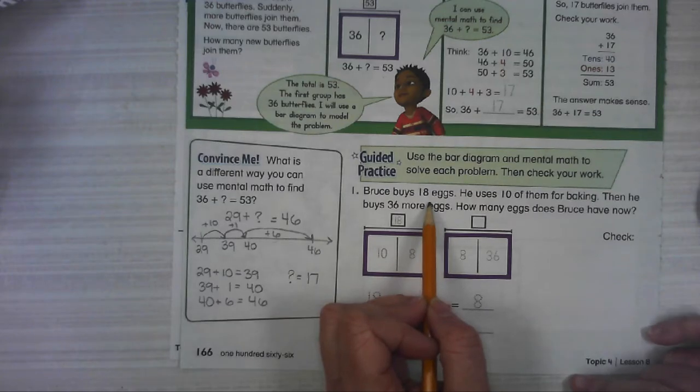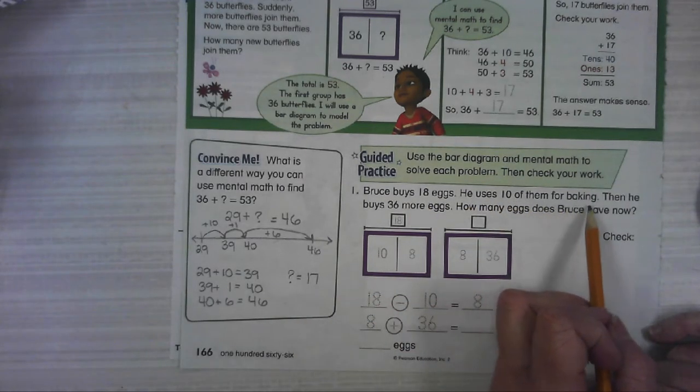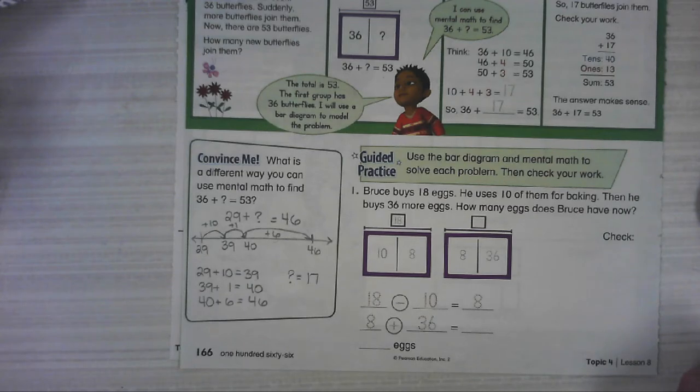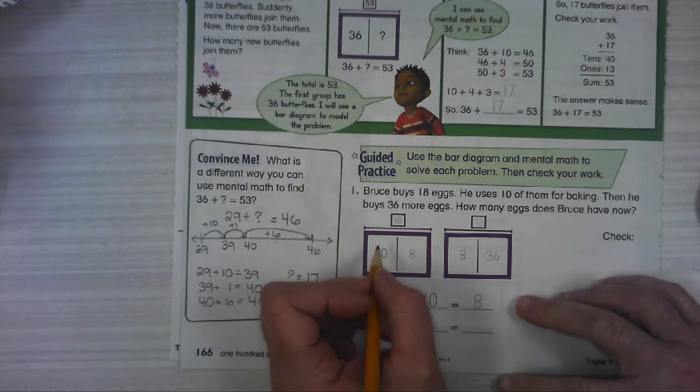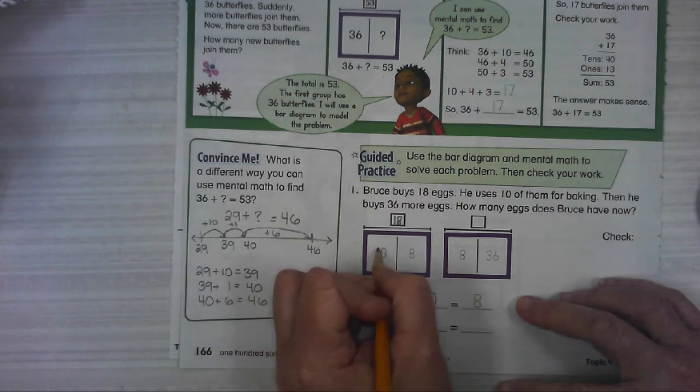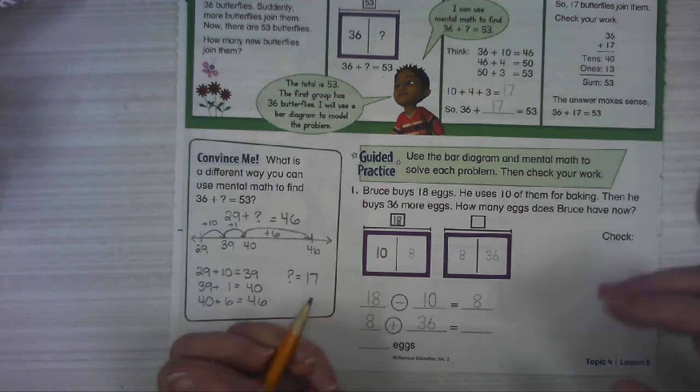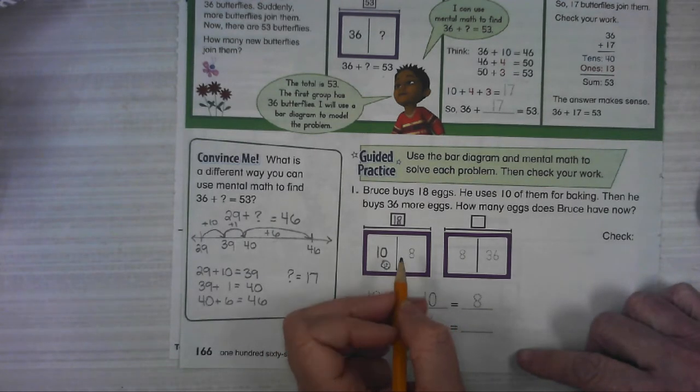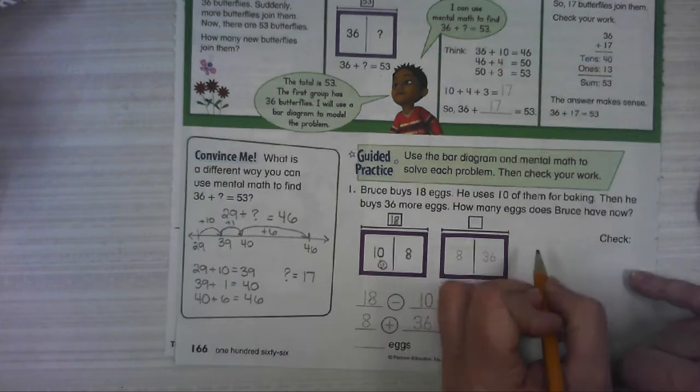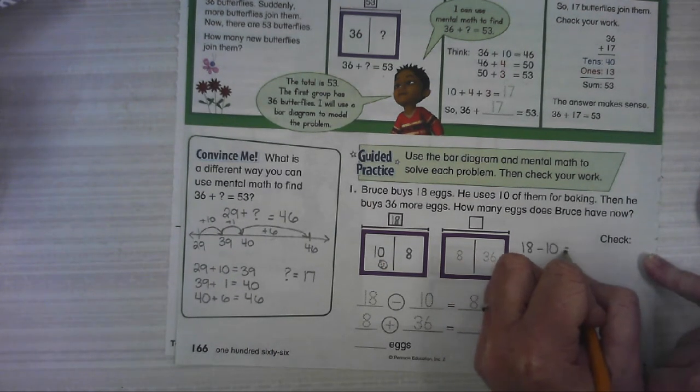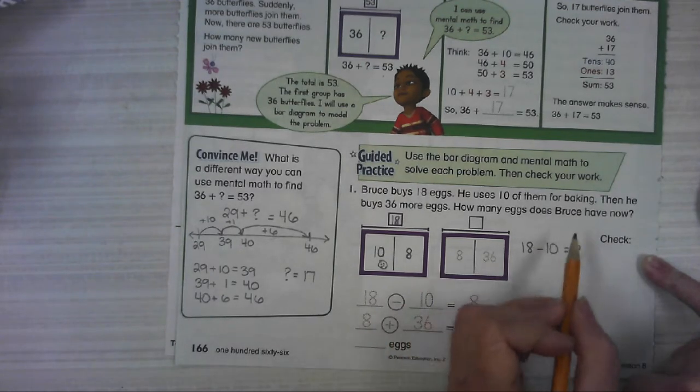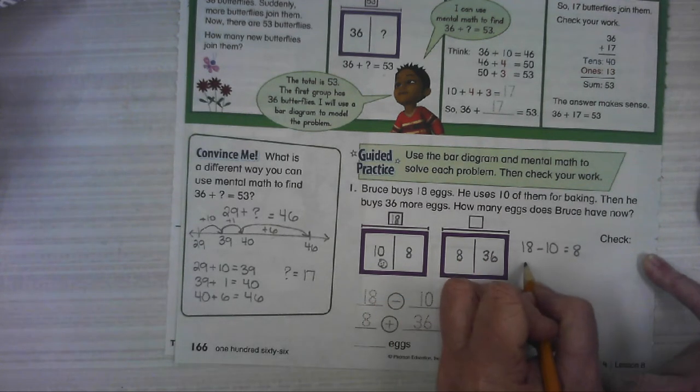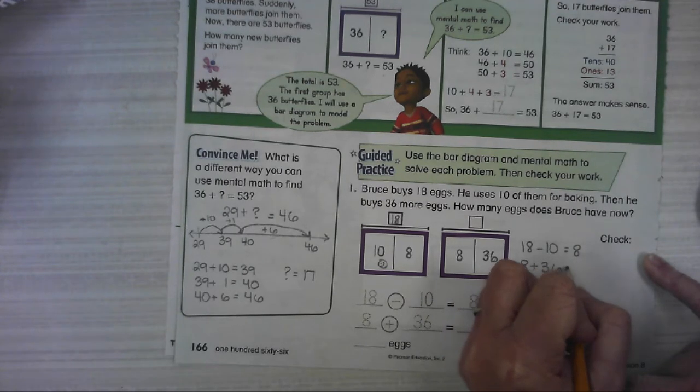So here we're going to use the bar model to show what the problem is, and then we'll check our work. Bruce buys 18 eggs. He uses 10 of them for baking. Then he buys 36 more eggs. How many eggs does Bruce have now? So they're showing us that he started out with 18 eggs. 10 of them turned into baking, which is cookies and cakes. So how many were left? Eight. It's kind of like 18 minus 10 equals 8. Then he bought 36 eggs. So 8 and 36 together makes how many?